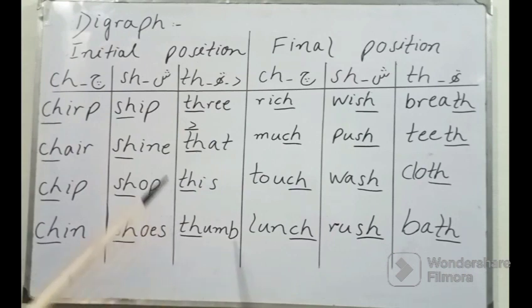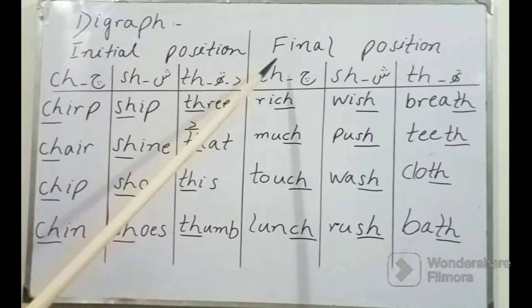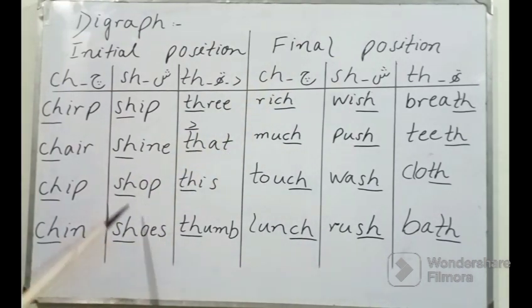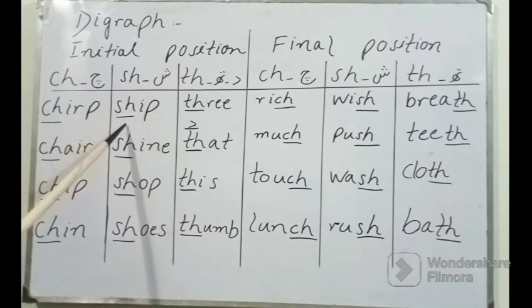Now you can see this chart. In this chart we have written different words like chirp, chip, chin. ان میں آپ CH sound کا استعمال دیکھ رہے ہیں۔ In سارے words میں CH sound: chirp, chip, chin. Now we have SH sound. You can see the word ship, shine, shop, and shoes. All these underlined letters are digraphs.